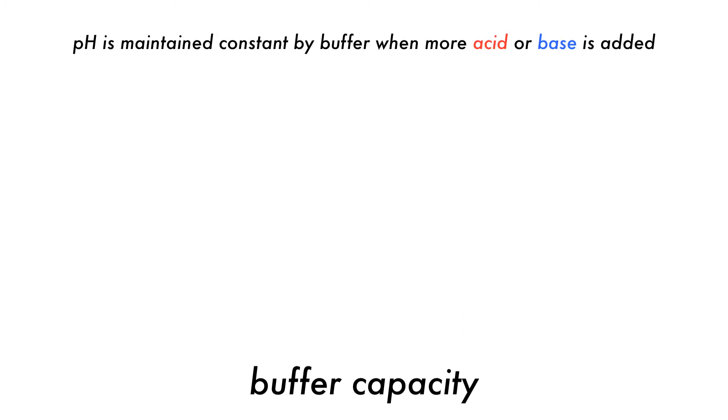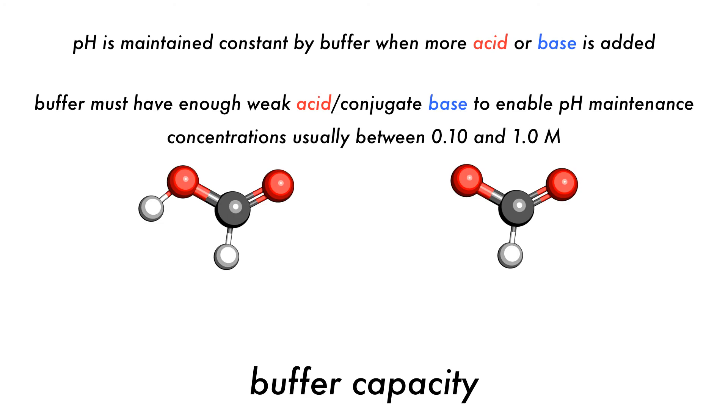A buffer is used when the pH must be kept approximately constant when more acid or base is added. Within reasonable limits of added acid or base, the pH should not change. For example, the concentration of formic acid formate ion in a buffer must be sufficient to consume all of the hydroxide ion that is added and still be able to control the pH.